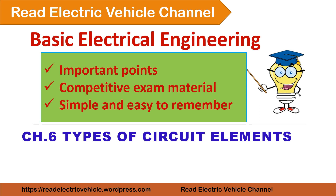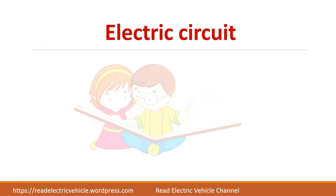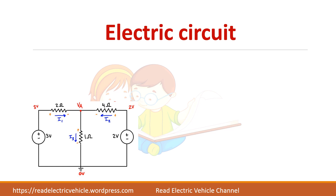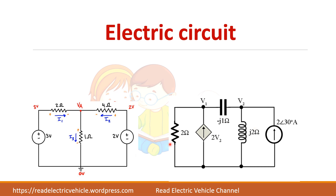In this video, let us see the different types of circuit elements and what is an electric circuit. This is an electric circuit — you can see here there are two voltage sources, a 3 volt and 2 volt source, and the remaining are resistors. In this other circuit you have a resistor, capacitor, inductor, and two current sources.